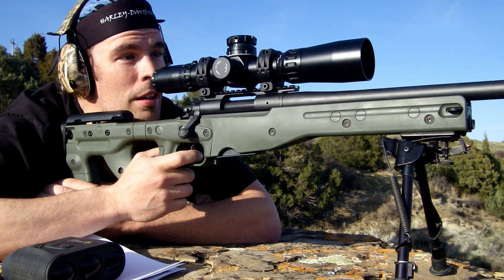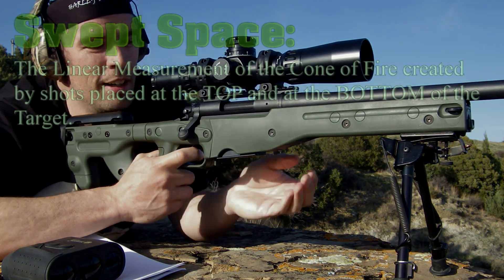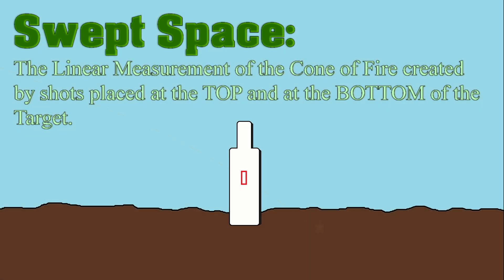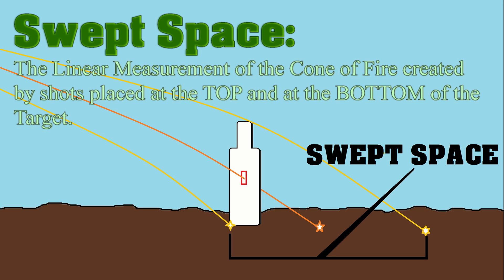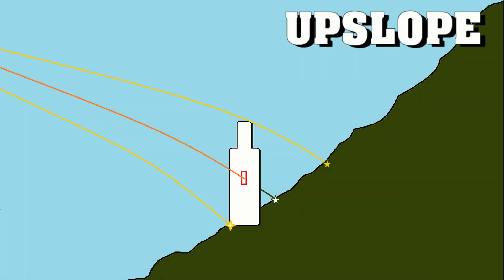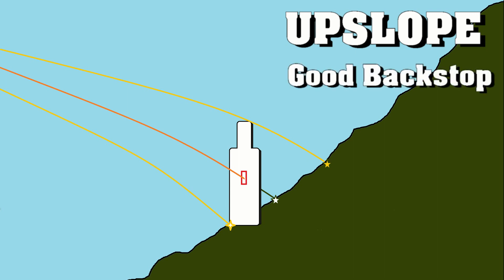Another thing you're going to want to be aware of is swept space. Swept space is a linear measurement of the cone of fire created by shots placed at the top of the target and shots placed at the bottom of the target. You have to take into account the shape of the trajectory coming down at a downward angle, especially at long ranges. This is going to have quite a variance based on the slope of the ground that the target is standing on — that's where swept space becomes important. First, consider a target standing on ground that is rising in front of the shooter — standing on a hill facing towards you.